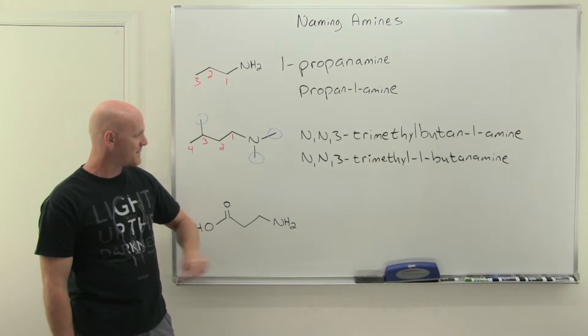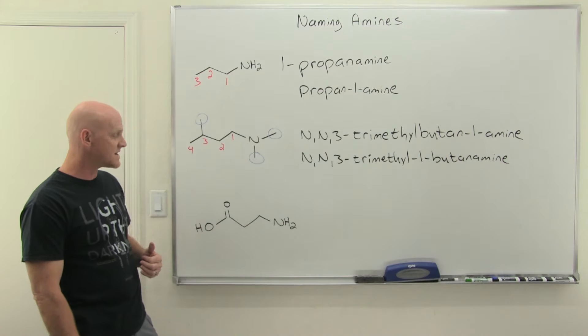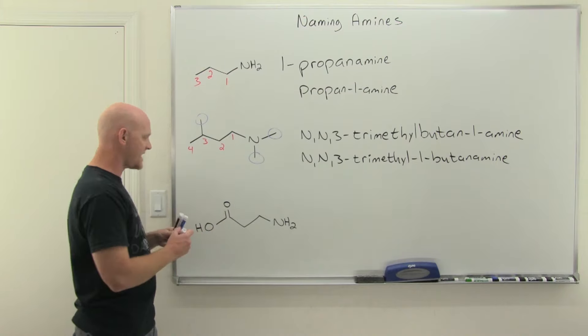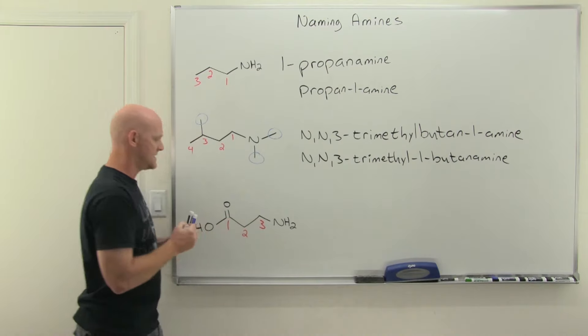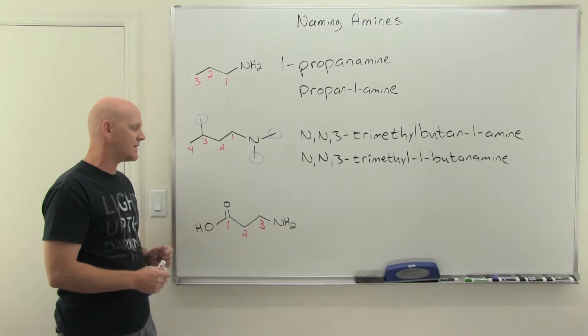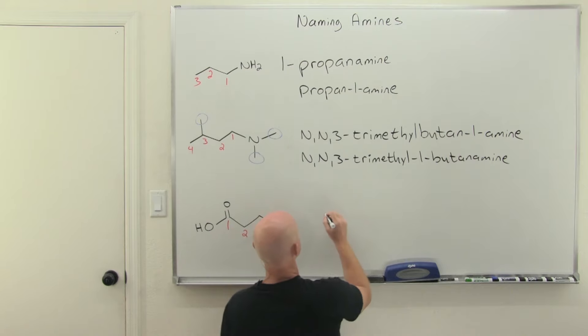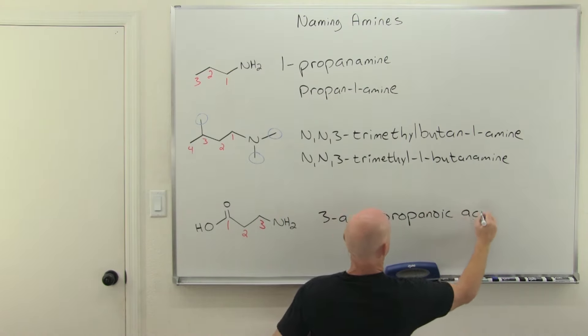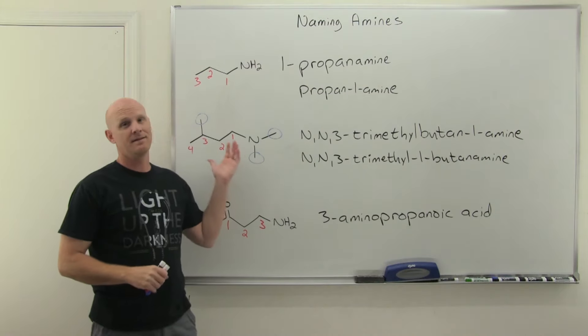We'll name this amine substituent at the front of the name with a prefix, not with the suffix as if it were the highest priority function group in the molecule. Here with our carboxylic acid, he's the highest priority. We'll number our three carbon chain starting from left to right as a result. That's going to be propanoic acid as the parent chain. But the amino group named as a prefix as a substituent beforehand, so we'll say 3-aminopropanoic acid. There is your IUPAC name and there is naming amines.